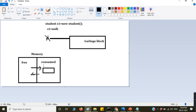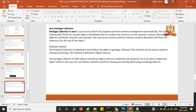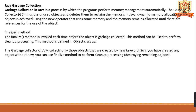The JVM automatically deletes the unused memory — that is called the garbage collector. The finalize method is invoked each time before the object is garbage collected. This method can be used to perform cleanup processing. The garbage collector of JVM collects only those objects created by the new keyword. If you created an object without new, you can use the finalize method to perform cleanup, destroying the remaining objects.